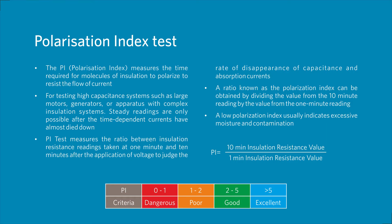Polarization Index Test: The PI, or Polarization Index, measures the time required for molecules of insulation to polarize to resist the flow of current. For testing high-capacitance systems such as large motors, generators, or apparatus with complex insulation systems, steady readings are only possible after the time-dependent currents have almost died down. PI test measures the ratio between insulation resistance readings taken at 1 minute and 10 minutes after the application of voltage, to judge the rate of disappearance of capacitance and absorption currents. A low polarization index usually indicates excessive moisture and contamination.